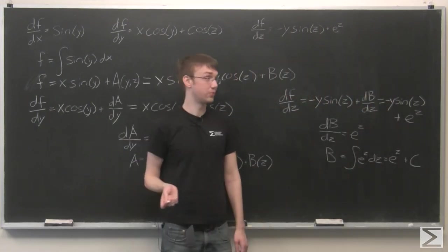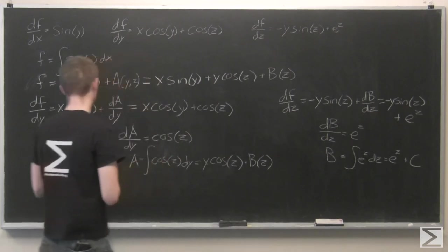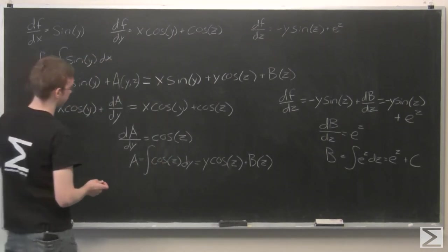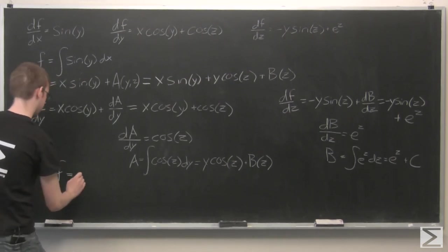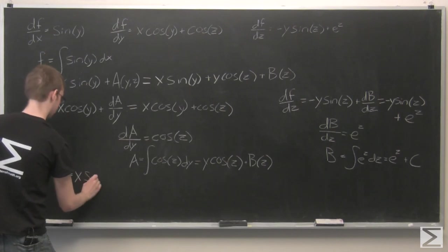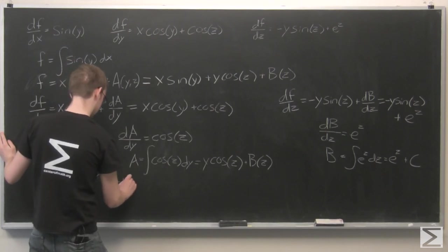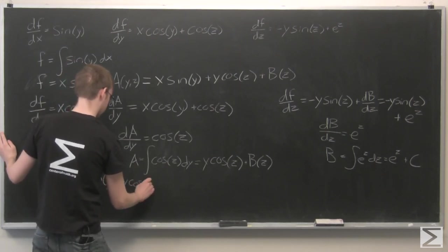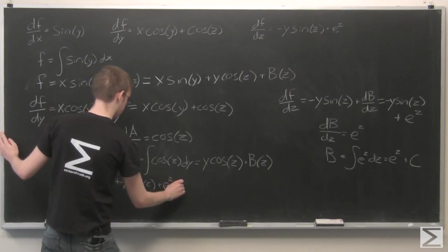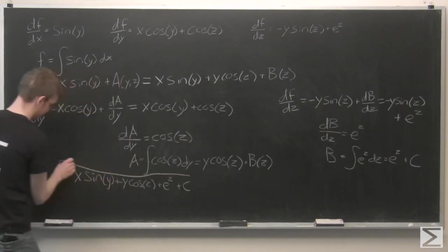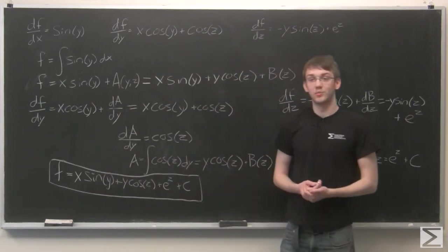Now that we have this expression for b, we can plug that back into our potential function and get our final expression. So there you have it — that's our potential function.